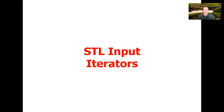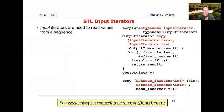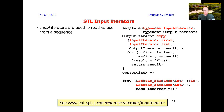We're now ready to start talking about input iterators. An input iterator is used to read values from an iterator sequence or iterator range, typically from beginning to end, but you can also start in the middle if you want. You can learn more about the input iterator category at the link at the bottom of the slide.